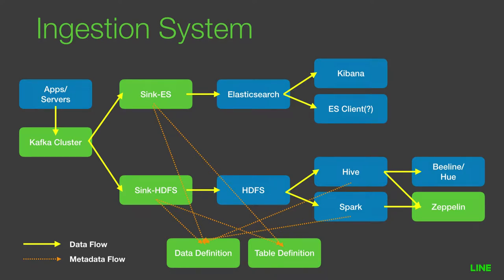The orange dotted line represents the flow of metadata. The sync component reads the data definition to get the timestamp and reads the table definition to decide storage location. Hive and Spark also need the same data definition to get the full schema from protocol buffers stored in HDFS. The main purpose of this system is to handle various types of data and to reduce human errors while processing them.